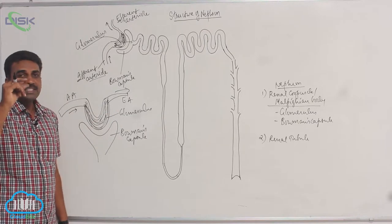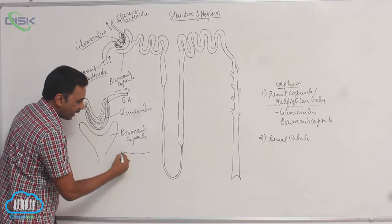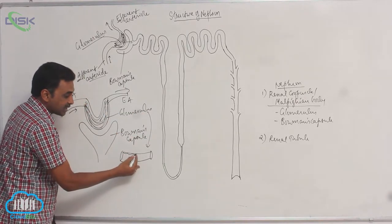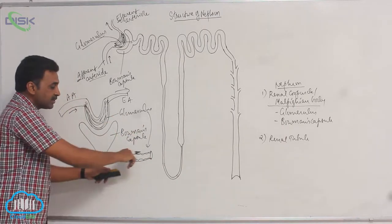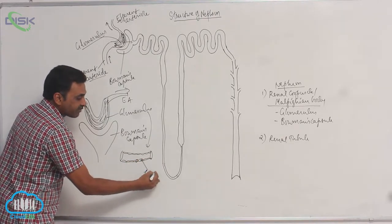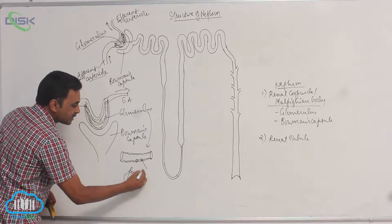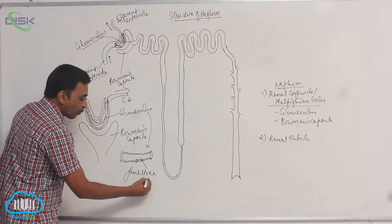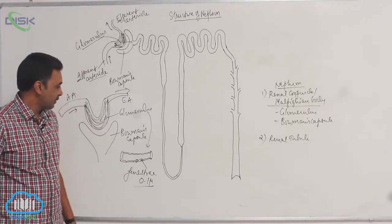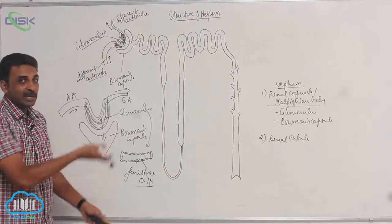The glomerulus is a bunch of capillaries, each lined by simple squamous epithelium with pores called fenestrae. These fenestrae are 0.1 microns in diameter — very small pores present in the wall of the glomerulus. Substances enter into Bowman's capsule through these pores under the high pressure built up inside the glomerulus.